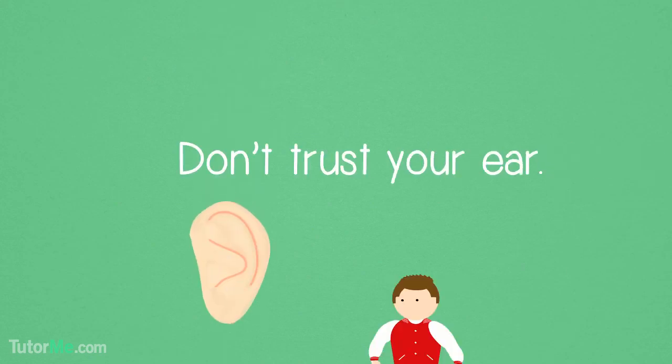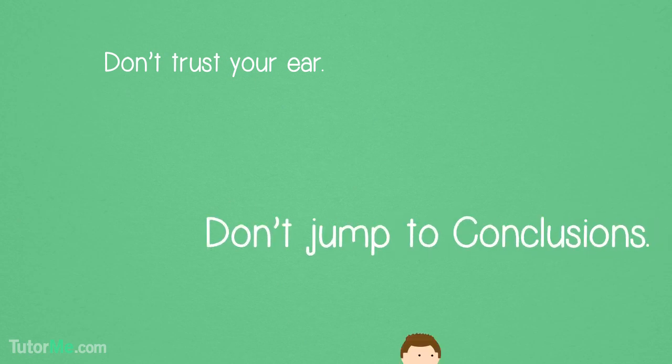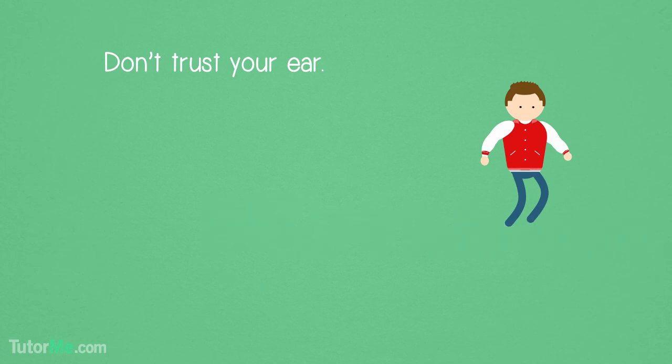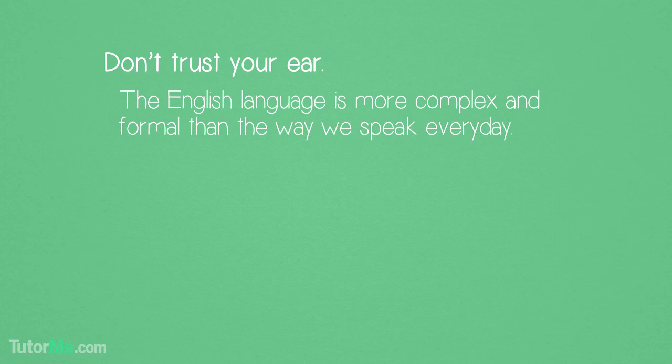Here is another important piece of strategy: Don't trust your ear. Oftentimes, sentences will be so incorrect that it'll sound obvious what is wrong with them. Don't jump to conclusions just because something sounds or doesn't sound correct. The English language is much more complex and formal than the way we speak every day. This doesn't mean that you can't use your ear to guide you through a problem. Sometimes it'll be correct. But don't use your ear as an end-all be-all judge for the accuracy of grammar.